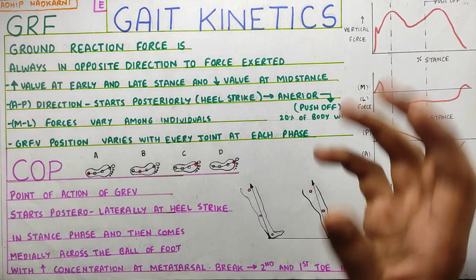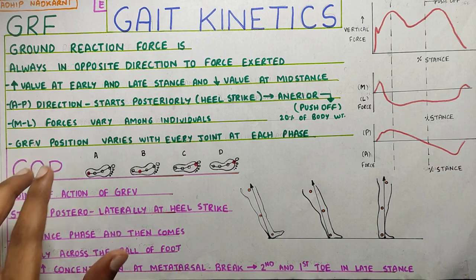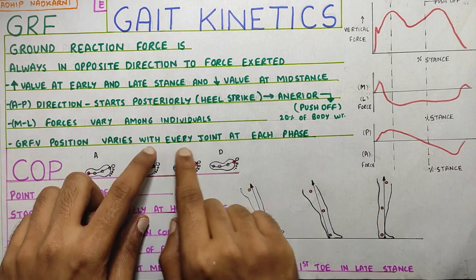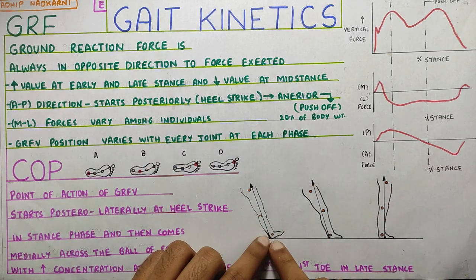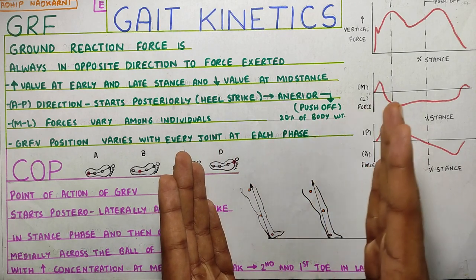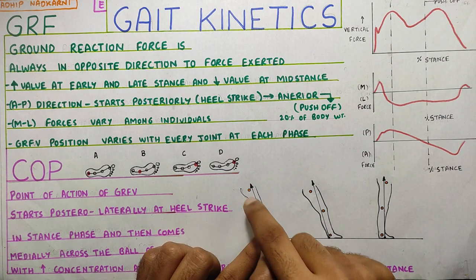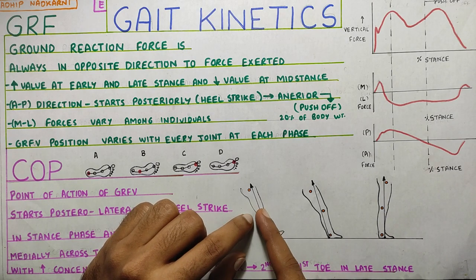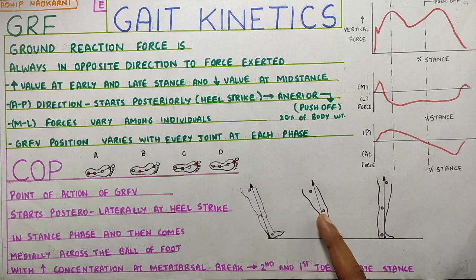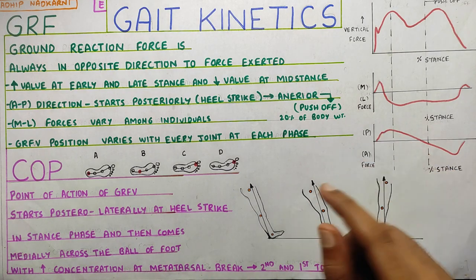Another important thing to note is the ground reaction force vector — the position of this vector will vary with every joint at each phase. At the joints you can see — ankle, knee, hip — during each phase of your stance phase, the position of the ground reaction force in comparison to your joint is changing. For example, at the knee joint it is anterior, then goes posterior, then anterior again. At the ankle it is posterior, posterior, then anterior. So this position of your ground reaction force keeps changing with every joint and with each phase.